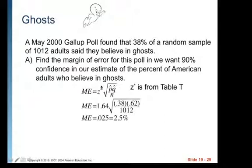So we want our margin of error. That's going to be what we add and subtract from our estimate. We're going to get the Z star from table T. The Z star for 90% confidence, you're going to look for confidence level of 90% at the top of that table. And then down at the bottom, it's going to give you what the Z star is.